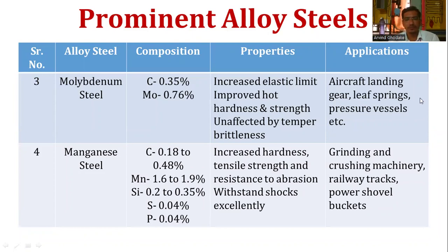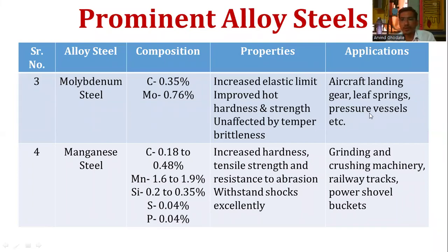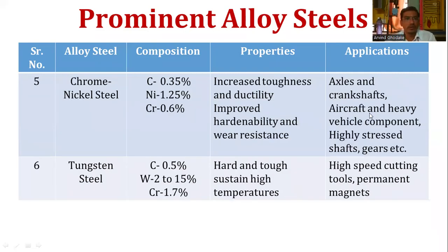Applications of manganese steel include grinding and crushing machinery, railway tracks, and power shovel buckets. The next alloy steel is chrome nickel steel, which contains 0.35 percent carbon, 1.25 percent nickel, and 0.6 percent chromium. Its properties include increased toughness and ductility, and improved hardenability and wear resistance. Applications include crankshafts, aircraft and heavy vehicle components, and highly stressed shafts and gears.